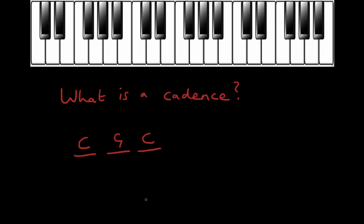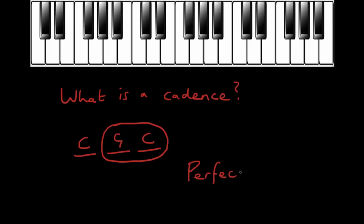That particular cadence — the movement from the chord of G to the chord of C — sounded pretty complete, final, and finished. We call that type of cadence a perfect cadence. So let's go ahead and look in a bit more detail at exactly what happens when we have a perfect cadence.